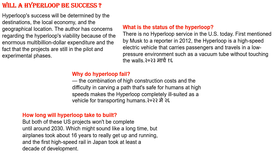The hyperloop is a high-speed electric vehicle that carries passengers and travels in a low-pressure vacuum tube environment without touching the walls. Why might hyperloop fail? High construction cost and the difficulty of carving a path safe for humans at high speed make the hyperloop challenging. Airplanes took about 16 years to get up and running, and Japan's first bullet train took at least a decade of development — so a 2035 completion target may be reasonable.